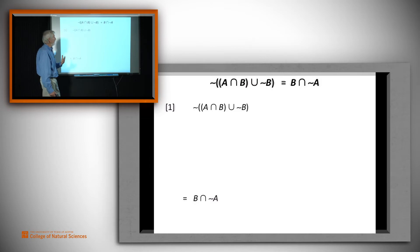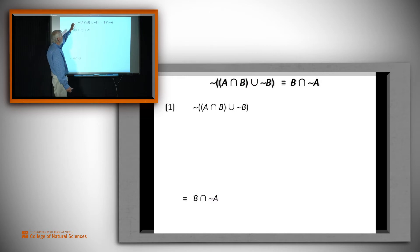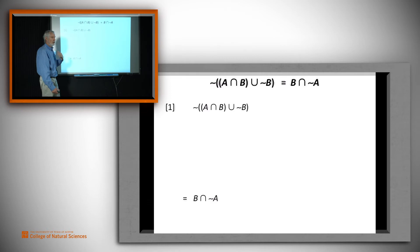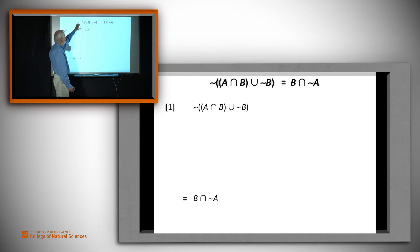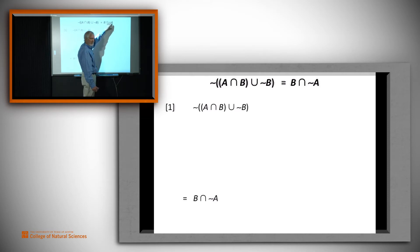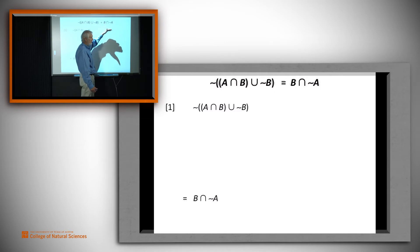We are going to show that this is true. One technique for proving it is that we could assume an element is in the left hand side and prove that it is also an element in the right hand side. We could use set definitions and then do a bunch of logic and then translate out of the set definitions at the tail end.